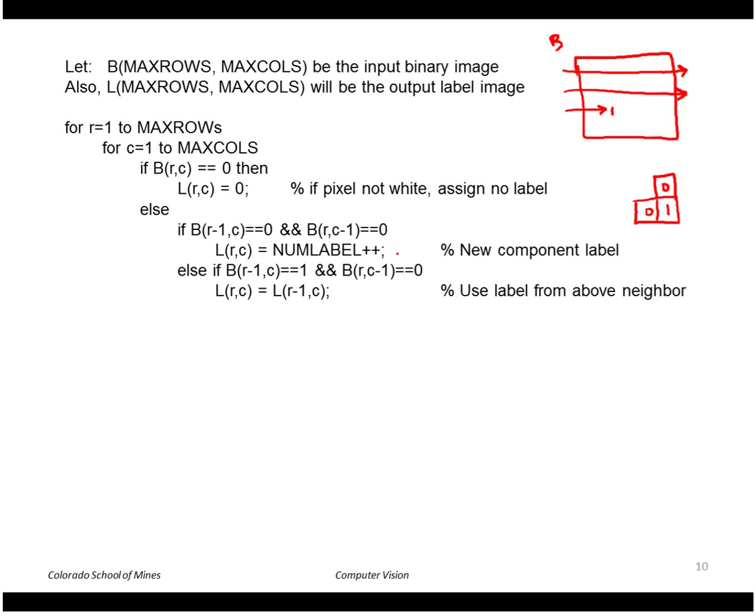Another possibility would be if the pixel where we're at is a one, but the pixel above is also one and the one to the left is a zero. Now we've already seen these pixels above and to the left, and they've already been assigned a label. So we're going to use that pixel's label for ourselves here. The third case would be where the left neighbor is a one and the top neighbor is a zero, in which case we use the label from the left neighbor.